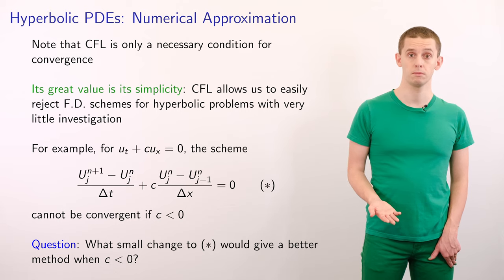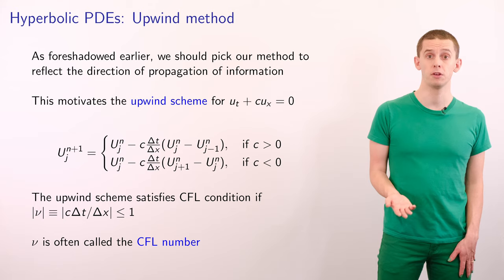But we could ask ourselves what small change we can make to get a better method when c is less than 0. As foreshadowed earlier, we should pick our method to reflect the direction or propagation of information.